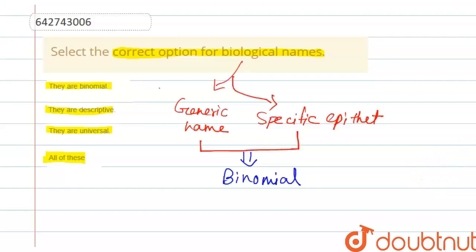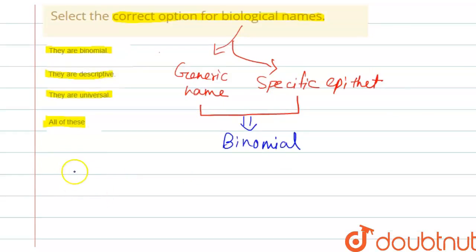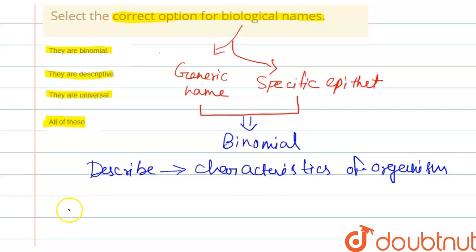Biological names are also descriptive in nature, as they describe the characteristics of organisms.